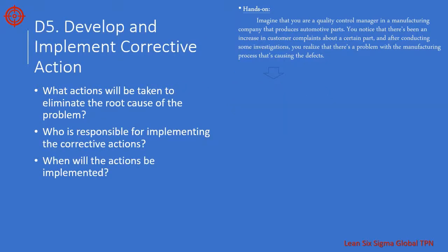The next step is to develop and implement corrective actions. Based on the information gathered in step 4, the team needs to come up with a plan of action to correct the problem. This could involve changing the process, modifying equipment, or other necessary measures. In our example, the team develops a plan of action and decides to install a new cooling system that will prevent the parts from warping during production.